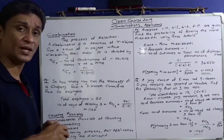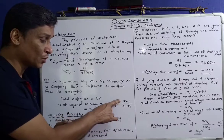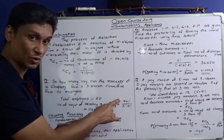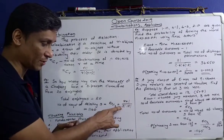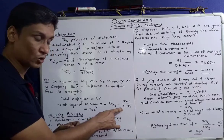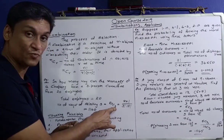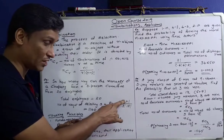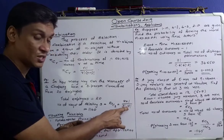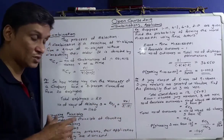Direct question: 20C3. Formula: nCr = n factorial divided by r factorial into n minus r factorial. Now 20C3: 20 factorial divided by 3 factorial into (20 minus 3) factorial, which is 20 factorial divided by 3 factorial into 17 factorial.